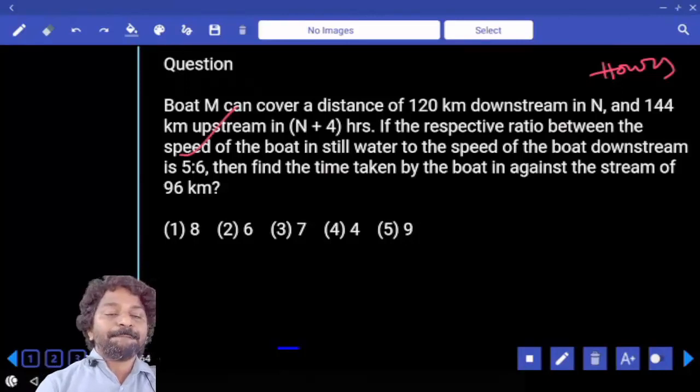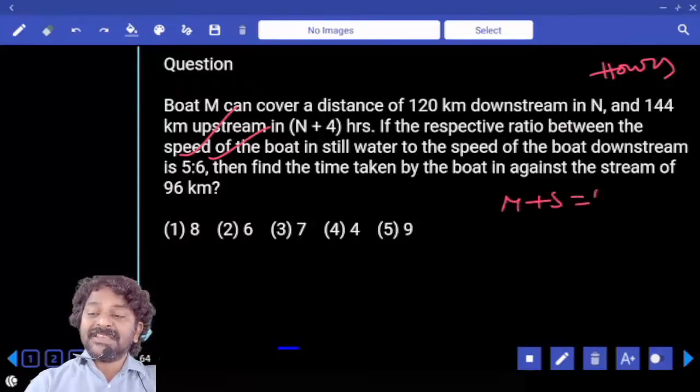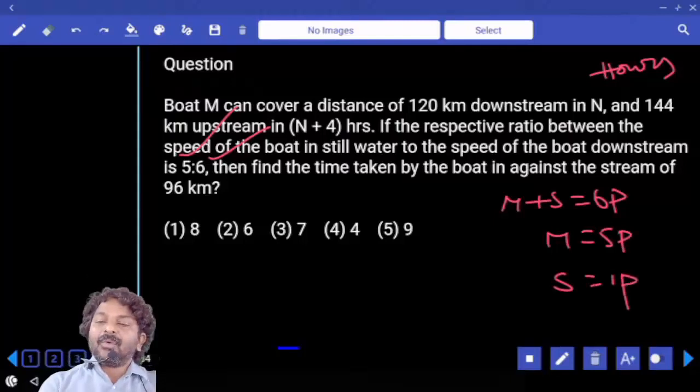What is boat speed here? 5 parts. And what is 6 parts? That means M plus S is equal to 6 parts. M is equal to 5 parts. Then S is equal to 1 part.